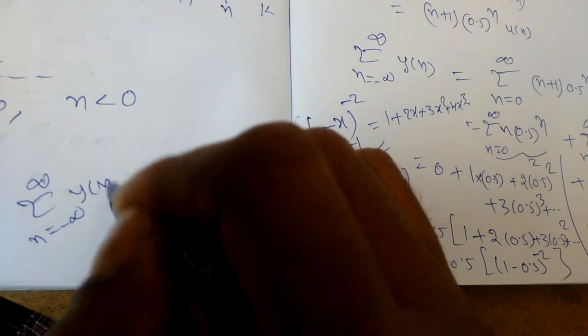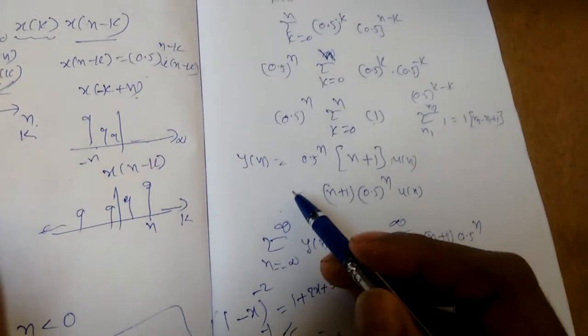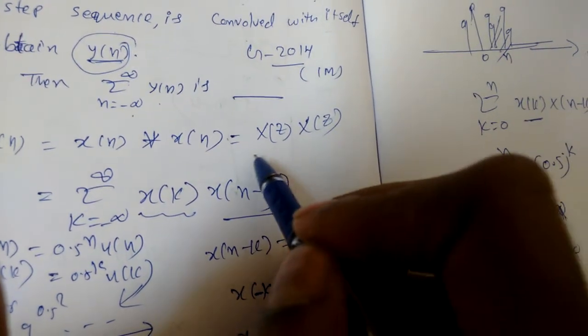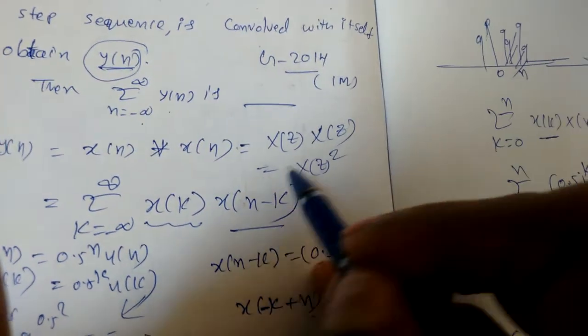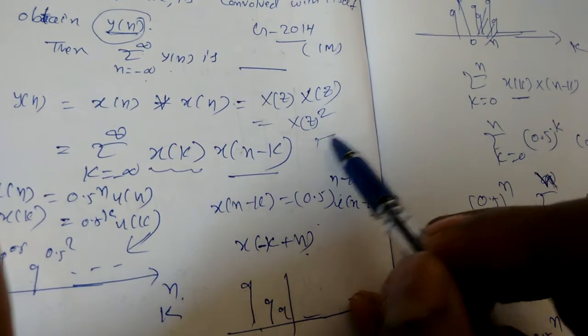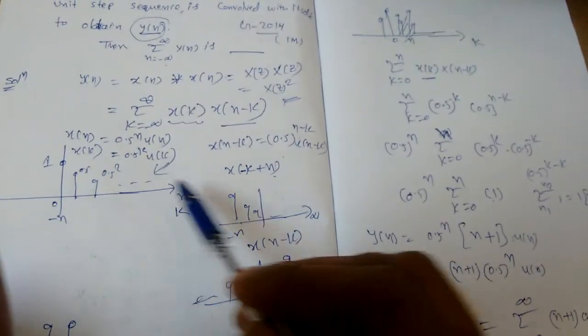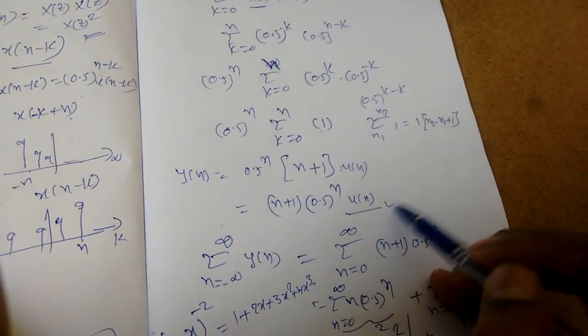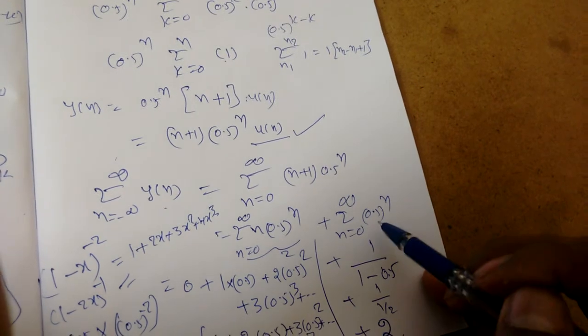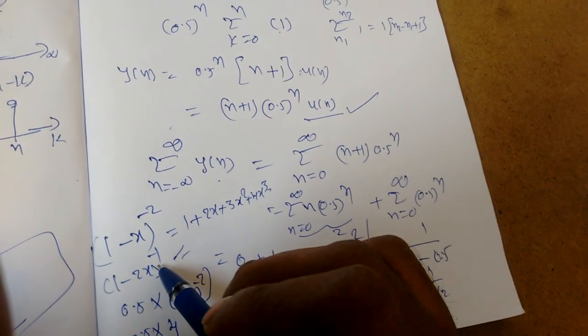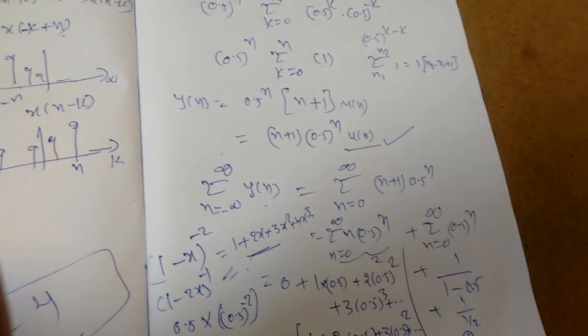So both expressions give 2, and sigma from n = -infinity to infinity of y(n) = 2 + 2 = 4. This is a somewhat lengthy procedure. Once we know Z-transforms, we can get this more easily: x(n) convolved with x(n) gives X(z)^2 in the Z domain, and using the convolution property of Z-transforms this becomes simpler. But the key formulas to remember are sigma of a^n = 1/(1-a) and the series expansion (1-x)^(-2).